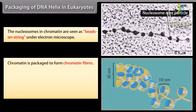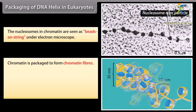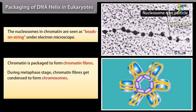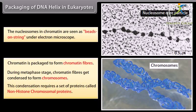The nucleosomes in chromatin are seen as beads on a string under an electron microscope. Chromatin is packaged to form chromatin fibers. During metaphase stage, chromatin fibers get condensed to form chromosomes. This condensation requires a set of proteins called non-histone chromosomal proteins.